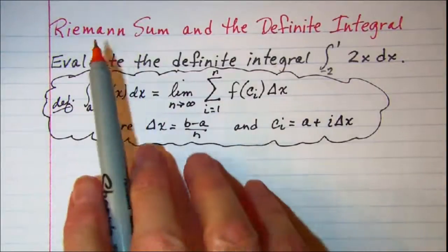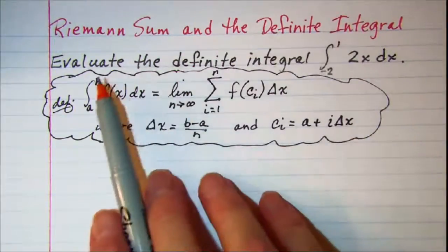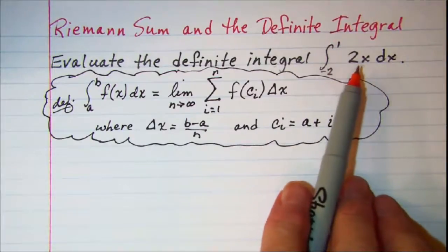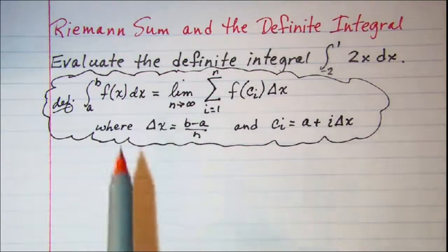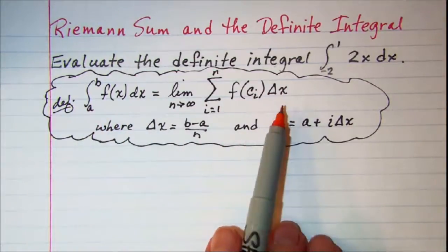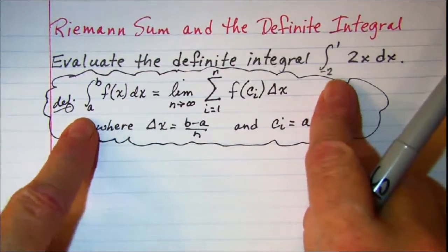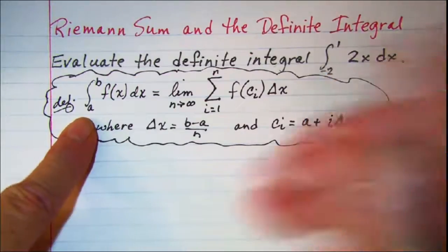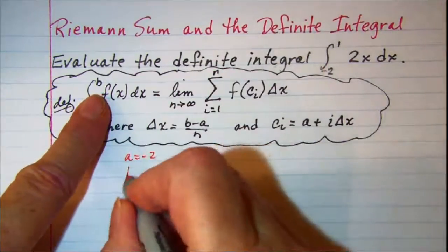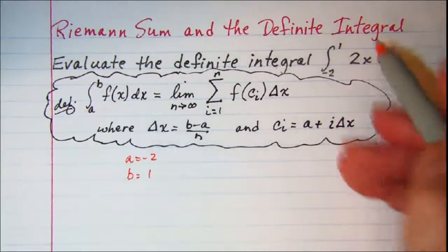In this video we will be using a Riemann sum to evaluate a definite integral. Our problem is to evaluate the definite integral from negative 2 to 1 of the function 2x dx. From our definition of the definite integral, we can see that a is negative 2, b is 1, and f of x is 2x.